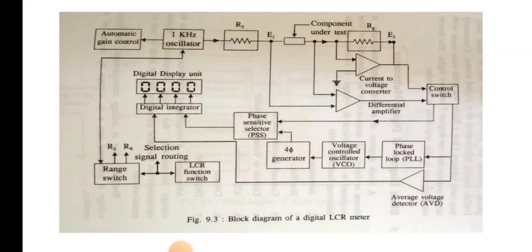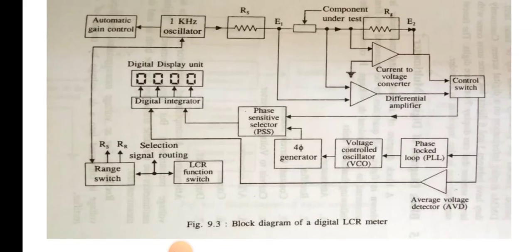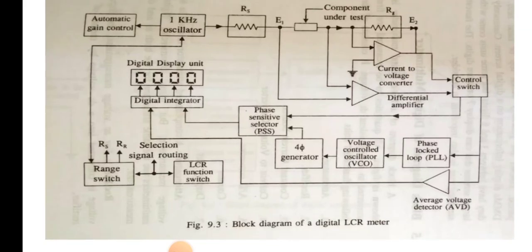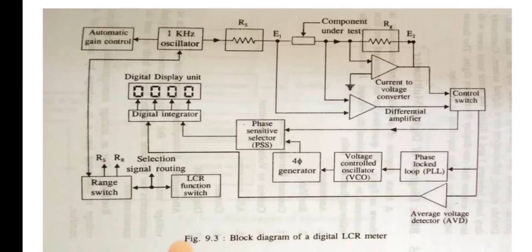The component to be measured is selected by the three-way switch, also called the LCR function switch, located at the bottom right side next to the range switch. This switch is used for the selection of the desired function. The working principle used in the LCR meter is to measure the voltage across the component under test.